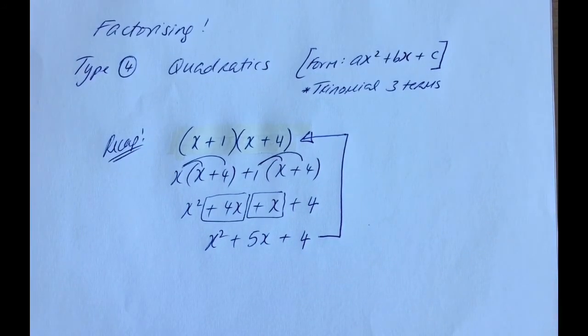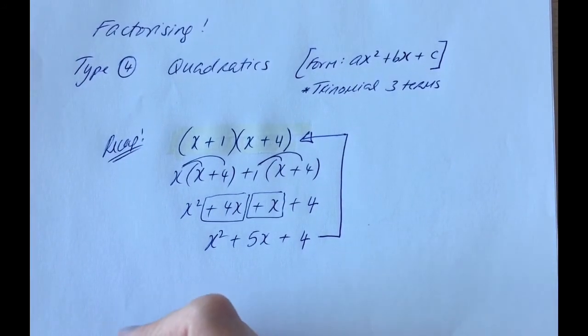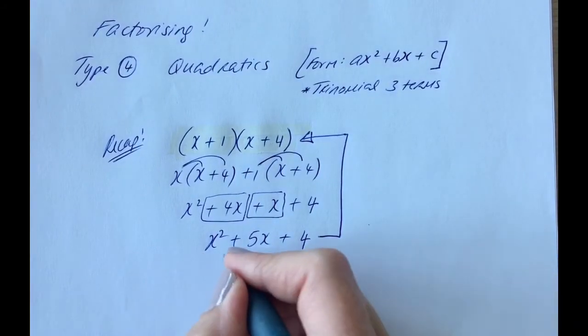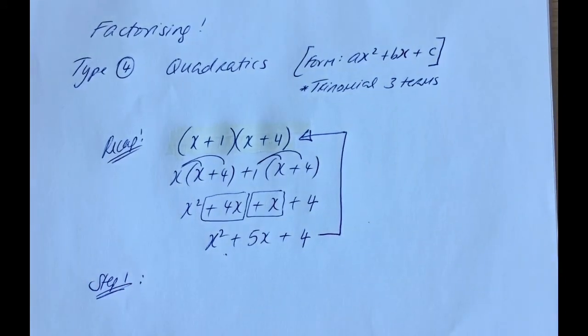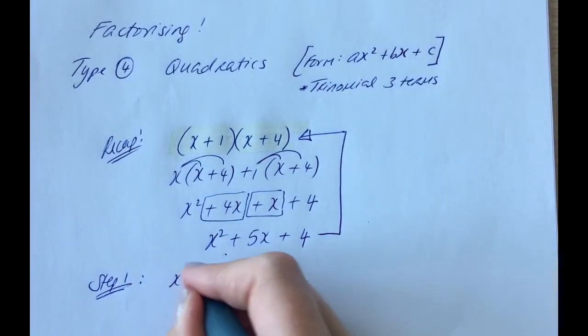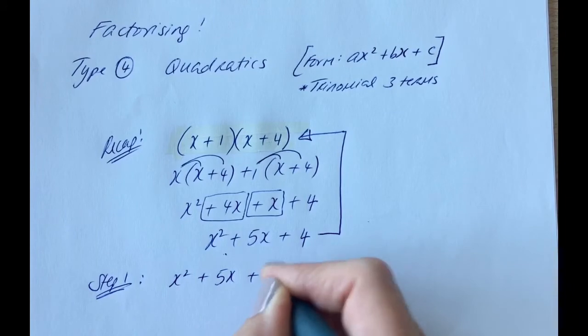So, as I said, we're going to do a four-step method here for this. So, I'm going to use this very example, and I'm going to show you how we do it. So, x squared plus 5x plus 4.